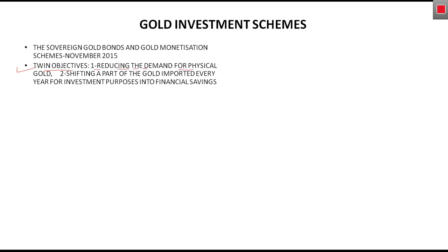The twin objectives of the scheme are: first, reducing the demand for physical gold; and second, shifting a part of the gold imported every year for investment purposes into financial savings. Whenever people buy gold they basically keep it at home and do not use it as a financial resource for generating income. These two gold investment schemes aim to address that.